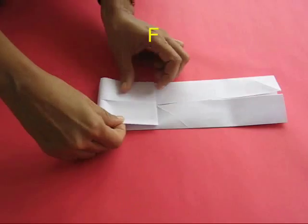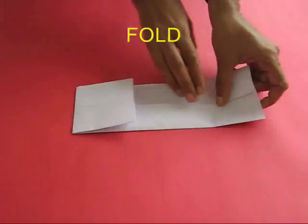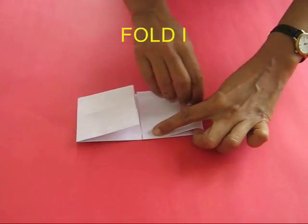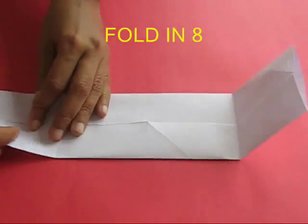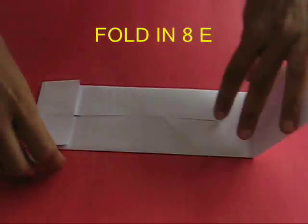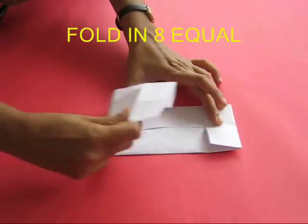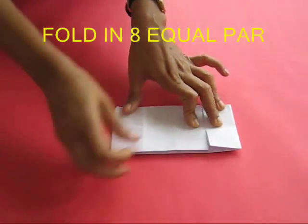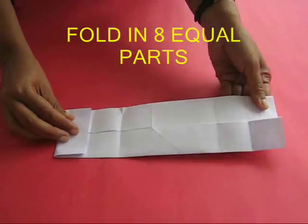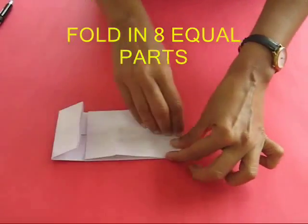This strip has to be folded into 8 equal parts. Fold the edges to the midline to get the quarters, and then the edges to the quarter lines to get the eighths. Then take one edge and crease it to one fold to get the quarter lines. This way you will be able to divide the strip into 8 equal parts.